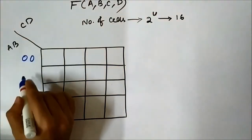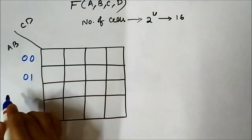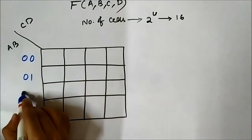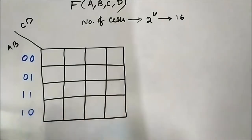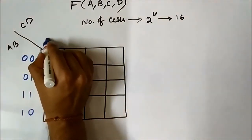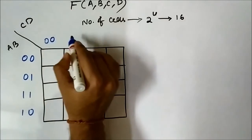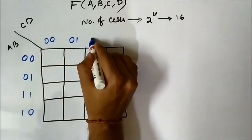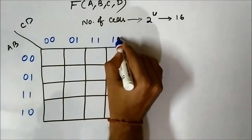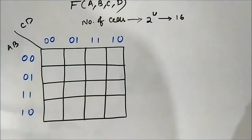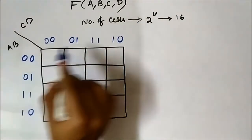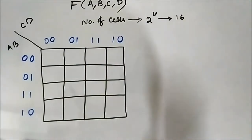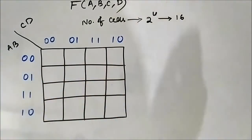The binary representation corresponding to each horizontal and vertical side follows Gray code order: 00, 01, 11, 10. Remember it is not 00, 01, 10, 11 — it will be 00, 01, 11, 10. The same applies to the other side as well: 00, 01, 11, 10. Always remember this — never use 00, 01, 10, 11; it should always be 00, 01, 11, 10.